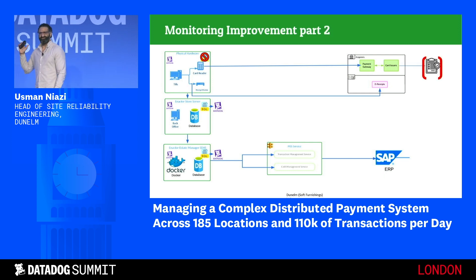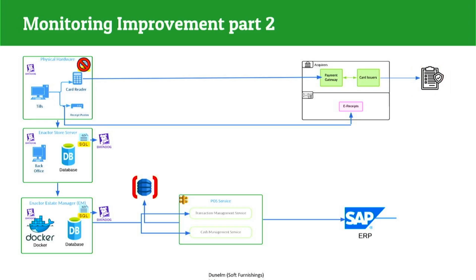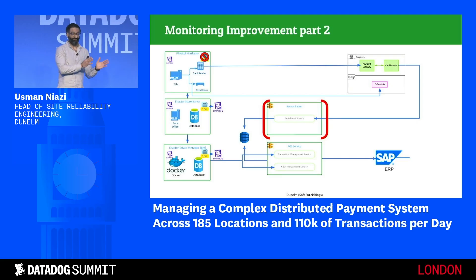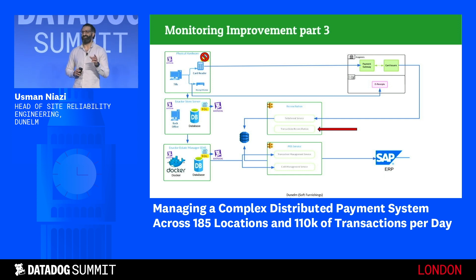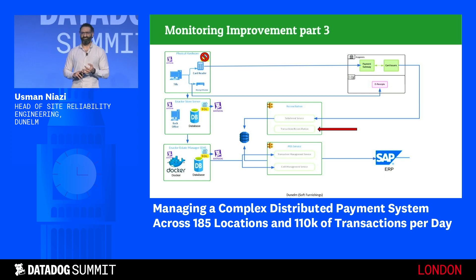We already receive a settlement file from our payment acquirer, and all card transactions go through our integration layer. We built a new service so we can now alert on any discrepancies. The good thing about this approach is that it puts no performance implications on the actual estate — it is very much decoupled from it. However, there are a couple of downsides to using the settlement file: it can take up to seven days for all transactions to be settled, and it only accounts for card payments, not cash payments.